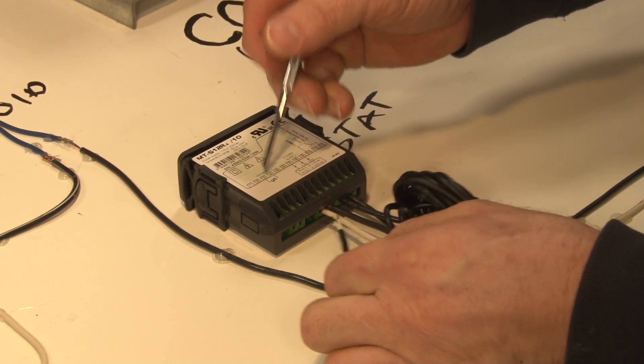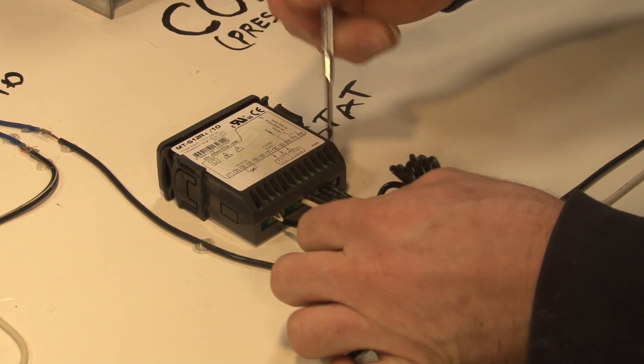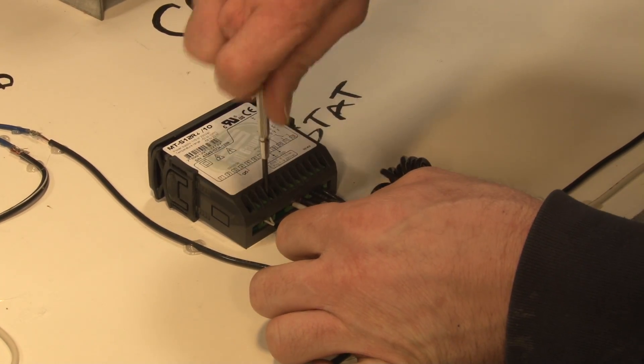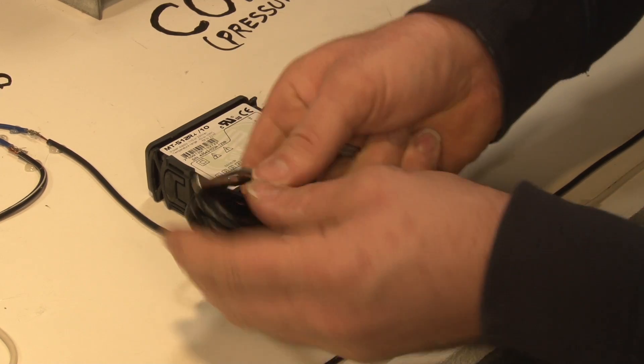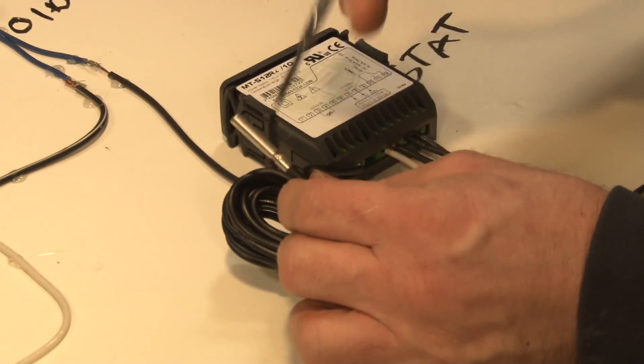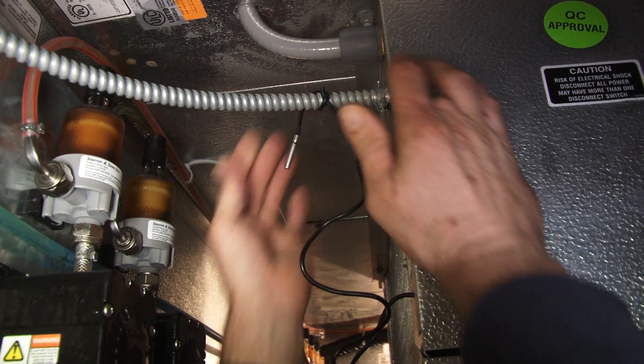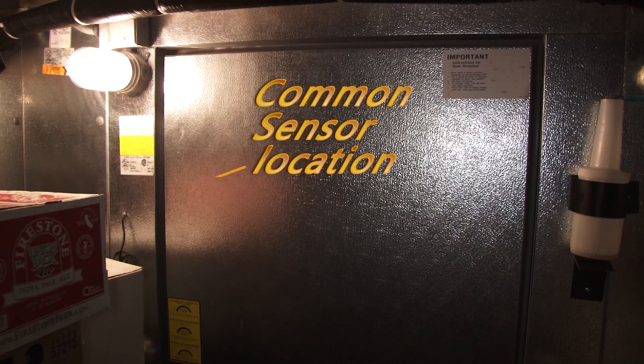And it's pretty easy. It just goes right in these two sensor terminals like all the other wires. Tighten that down. And this is our ambient temperature sensor. This we can mount anywhere in the back of the evaporator coil or anywhere in the cooler box.